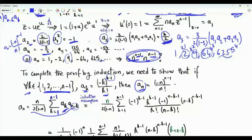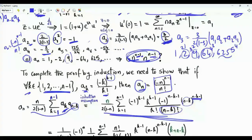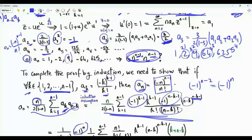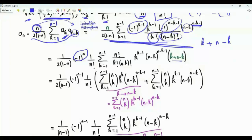Substituting the induction hypothesis: Aₖ equals (−1)^(k−1)·k^(k−1) / k!, and A_(n−k) equals (−1)^(n−k−1)·(n−k)^(n−k−1) / (n−k)!. To finish the derivation, we need to show that the resulting expression equals (−1)^(n−1)·n^(n−1) / n!. The two sign factors multiplied together give (−1)^(n−2) = (−1)^n. We take the factor n outside: since n = k + (n−k), and we have k! and (n−k)! downstairs, we multiply and divide by n! to get the binomial coefficient n choose k inside the sum.